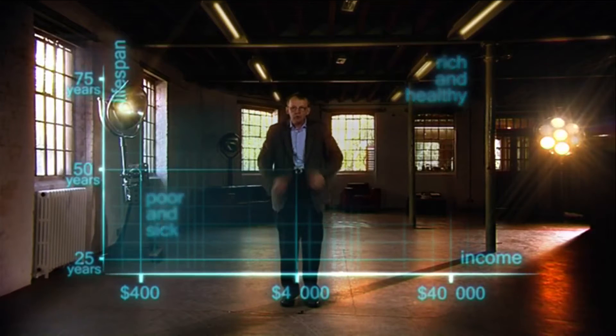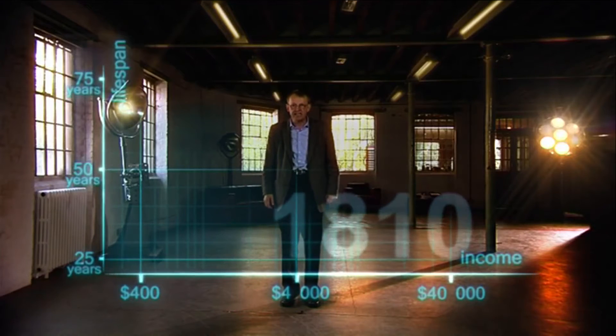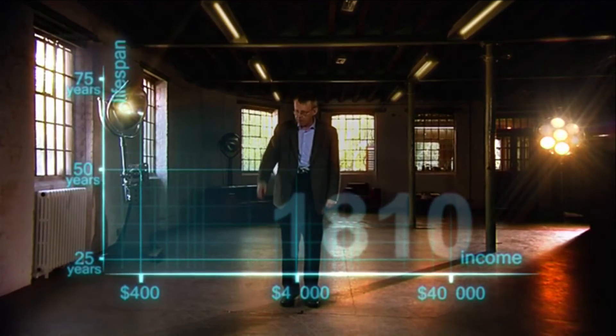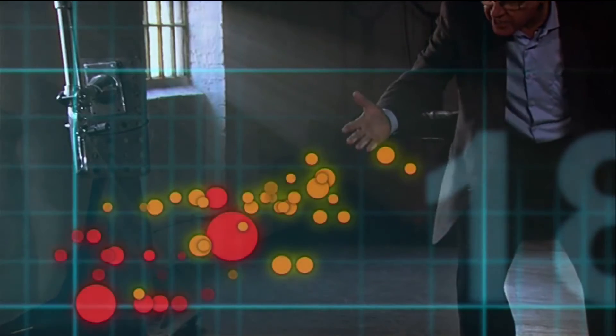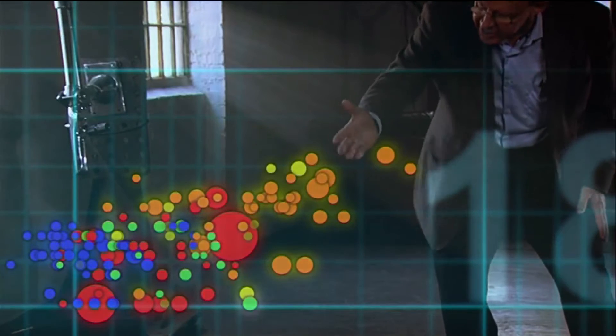Now, I'm going to show you the world 200 years ago, in 1810. Here come all the countries. Europe brown, Asia red, Middle East green, Africa south of Sahara blue, and the Americas yellow.